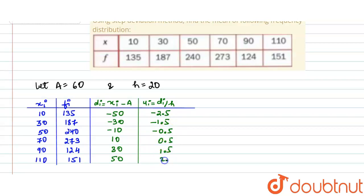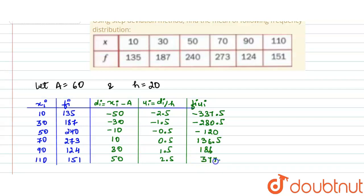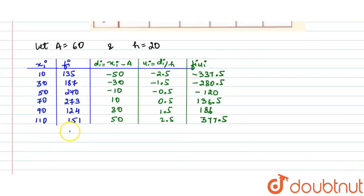Now I will find the values of fi·ui by multiplying each fi by the corresponding ui. The results are: 135 × (−2.5) = −337.5, 187 × (−1.5) = −280.5, 240 × (−0.5) = −120, 273 × 0.5 = 136.5, 124 × 1.5 = 186, and 151 × 2.5 = 377.5.